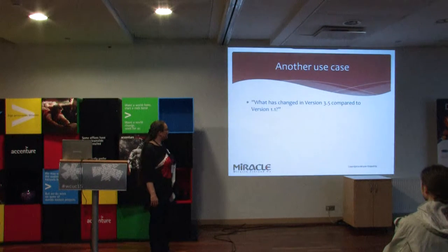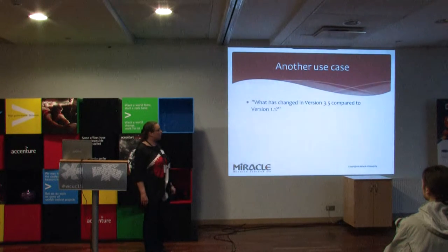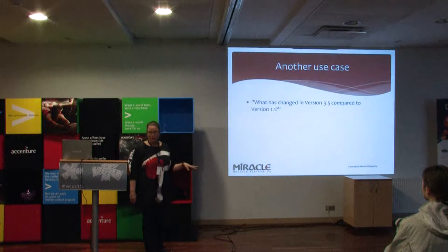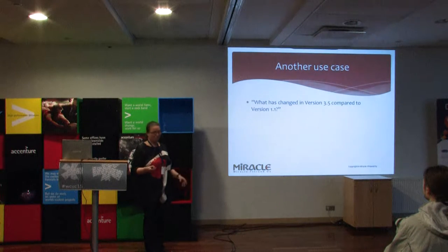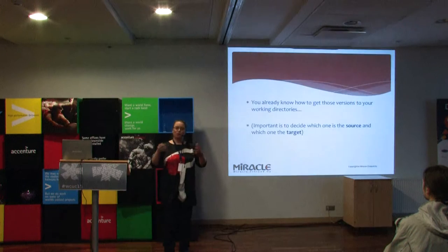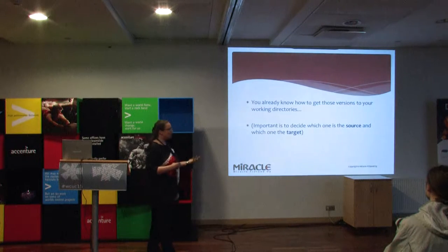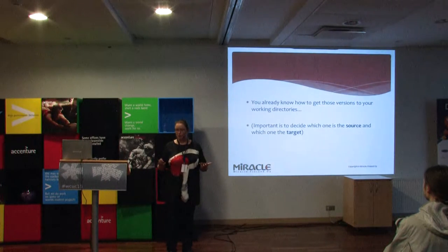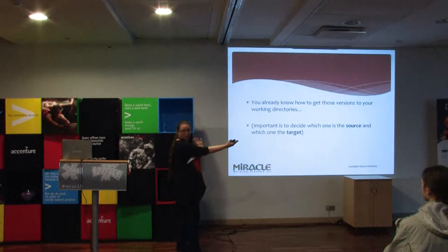Don't have separate processes. Another very common use case is people asking: 'What has changed in version 3.5 compared to version 1.1?' Or: 'I have version 1.1 with data inside — please upgrade it to 3.5 without losing my data.' I can do that. You just download and check out both versions from version control to your working directory and open them with the tool. It's important to decide what you're comparing to what — are you comparing 1.1 to 3.5, or 3.5 to 1.1?